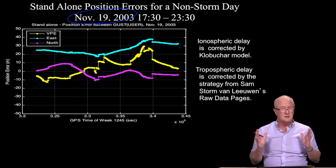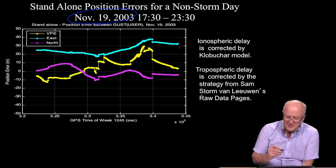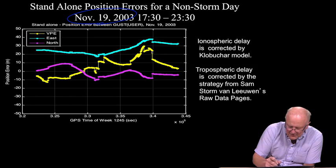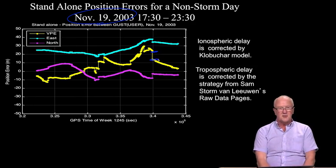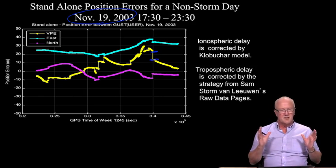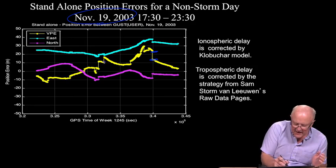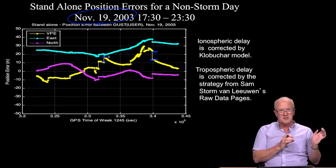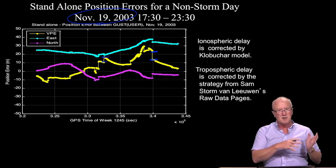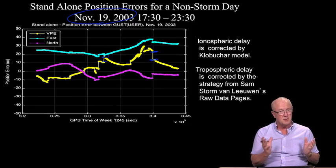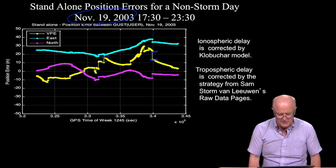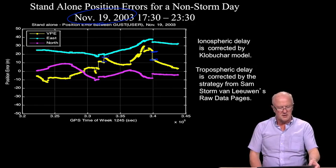The error is large compared to what we expect for stand-alone. Notice also that there are steps or discontinuities in the error traces as a function of time. Those steps occur due to the rising or setting of a satellite. If a new satellite becomes visible over the horizon, we generally get a jump down. If a satellite sets, our geometry matrix G becomes weaker, our DOPs become larger, and we generally get a step up. This describes stand-alone position errors for a non-storm day.